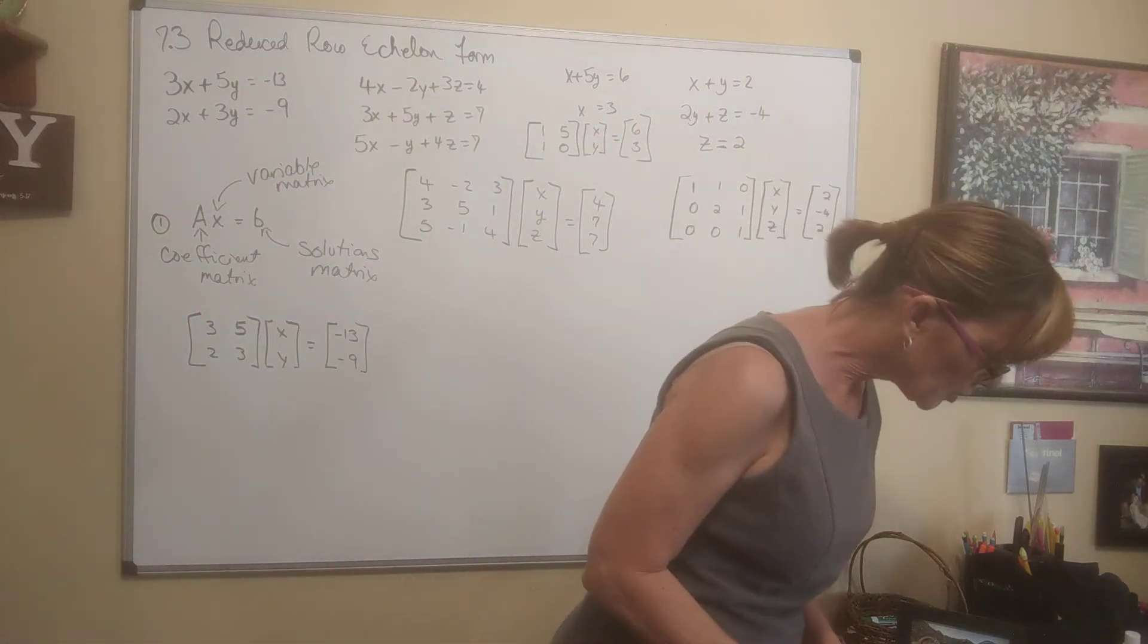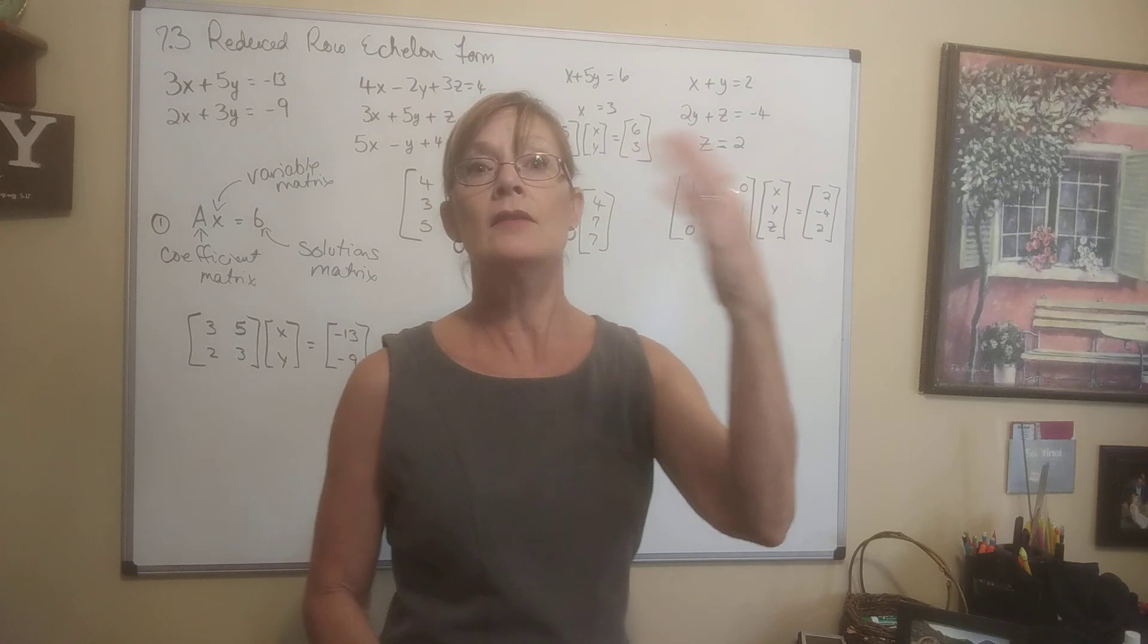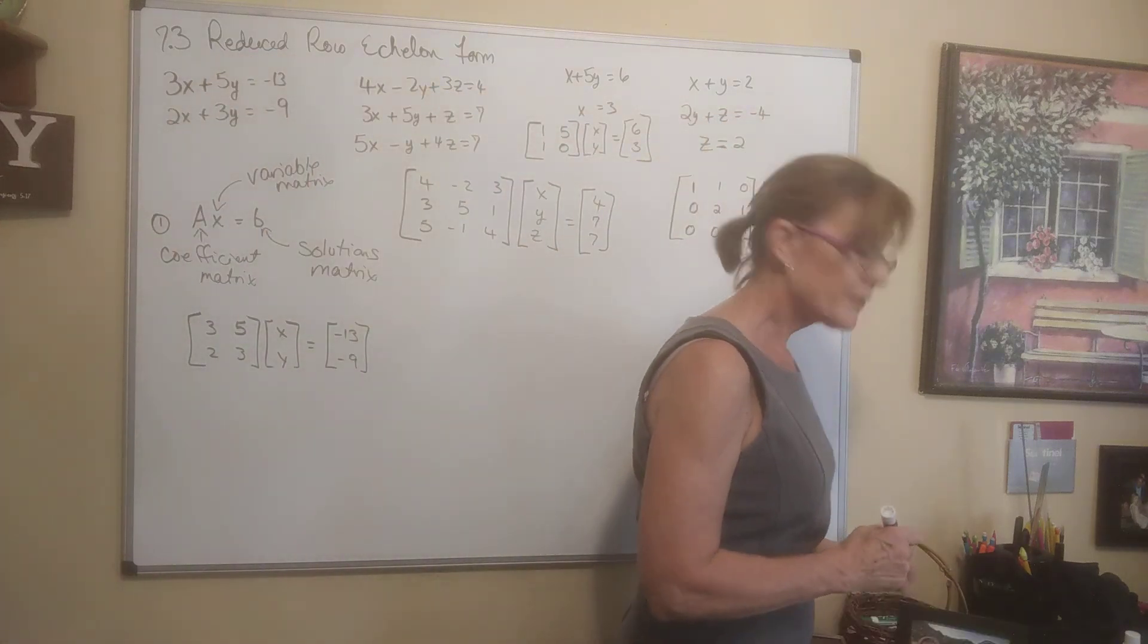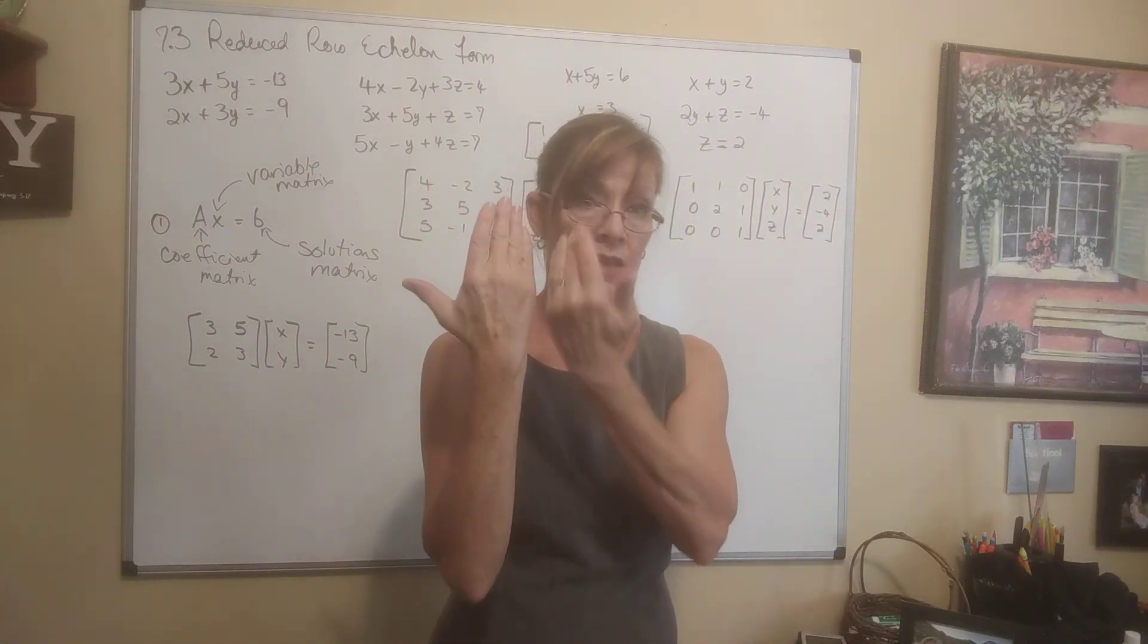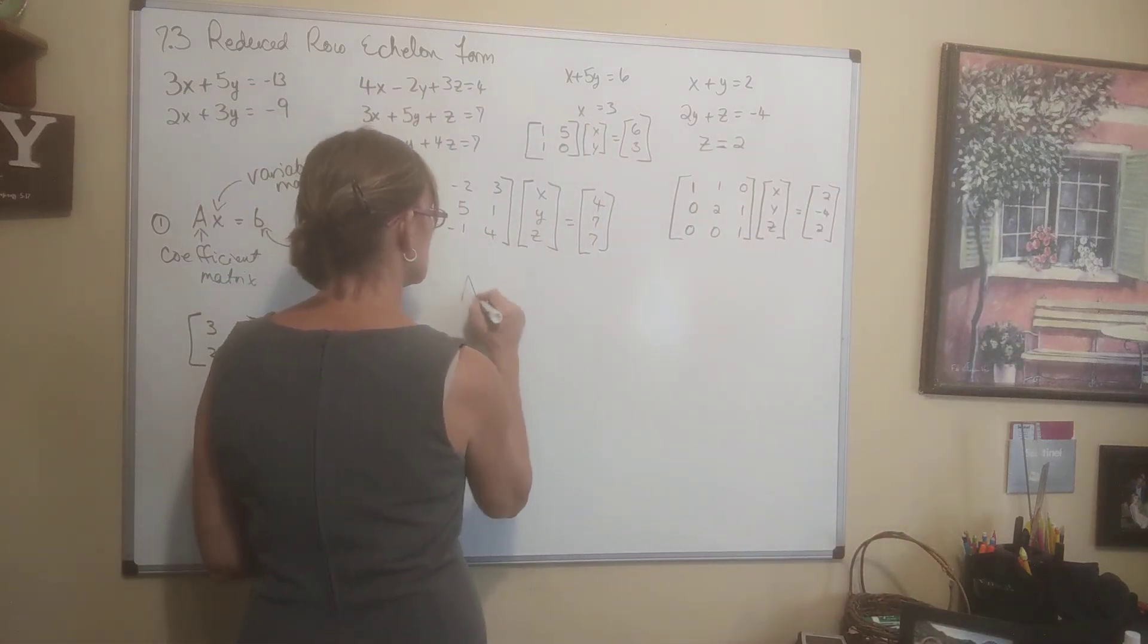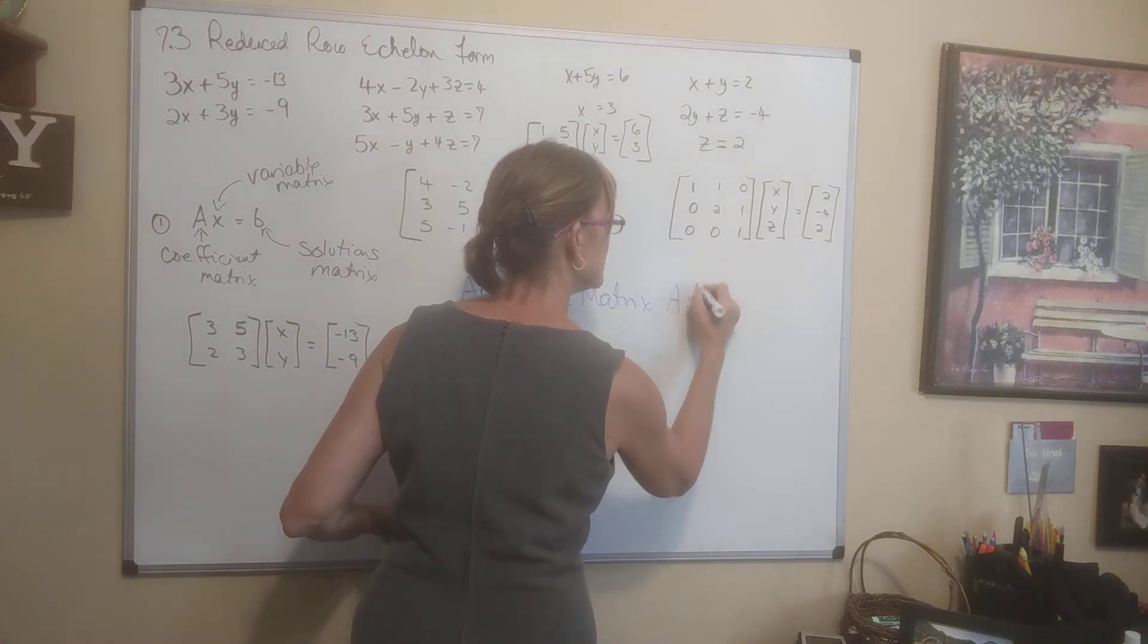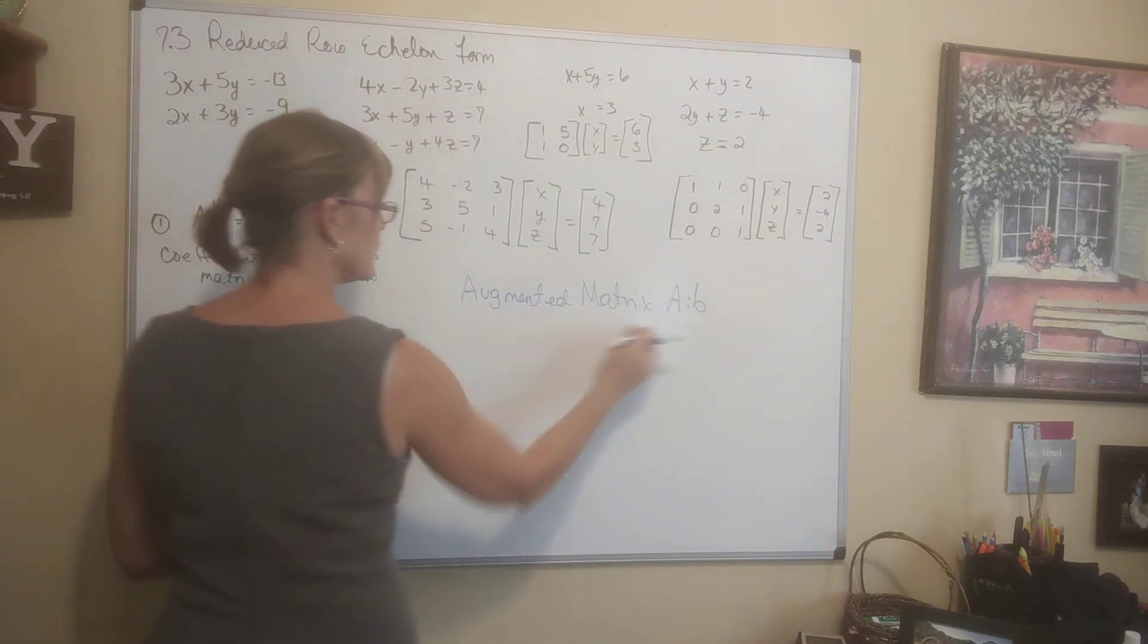Sometimes they will ask you to write an augmented matrix. We're going to need that form. To augment something means to add on something. So to form the augmented matrix, you take the coefficient matrix and you augment it with the solutions matrix. You just kind of stick it on the end. So that is the augmented matrix. I'm going to draw a line just to distinguish between the solutions matrix.